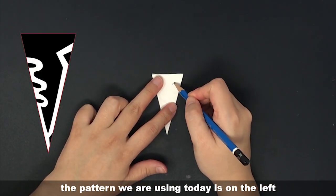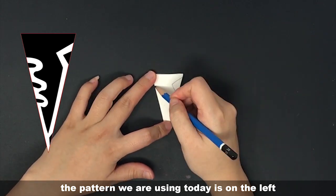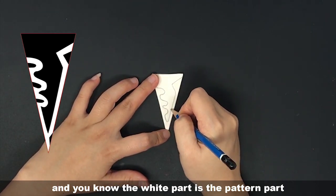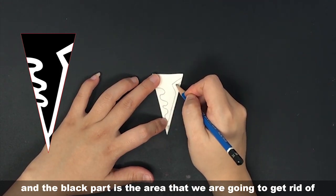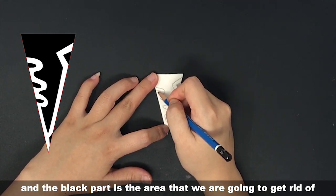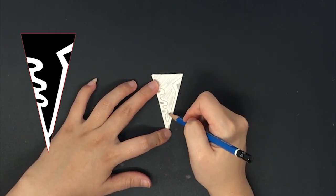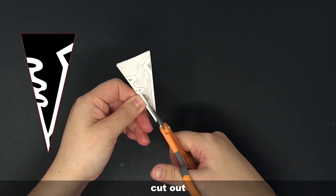The pattern we are using today is on the left. The white part is the pattern part, and the black part is the area that we are going to get rid of and cut out.